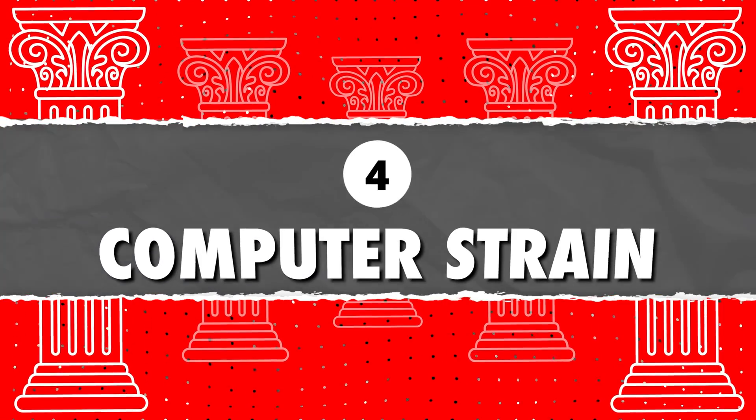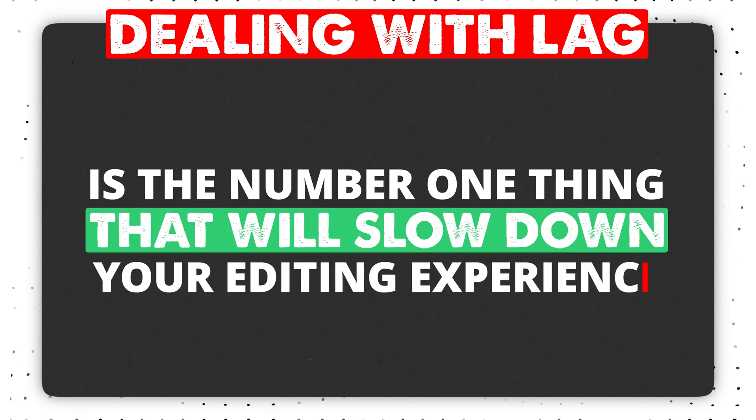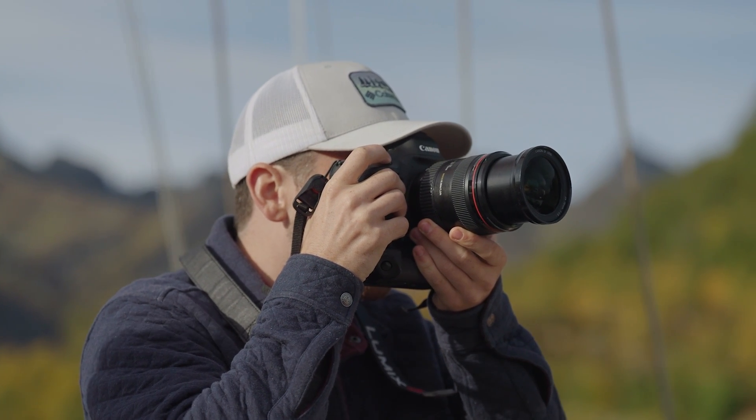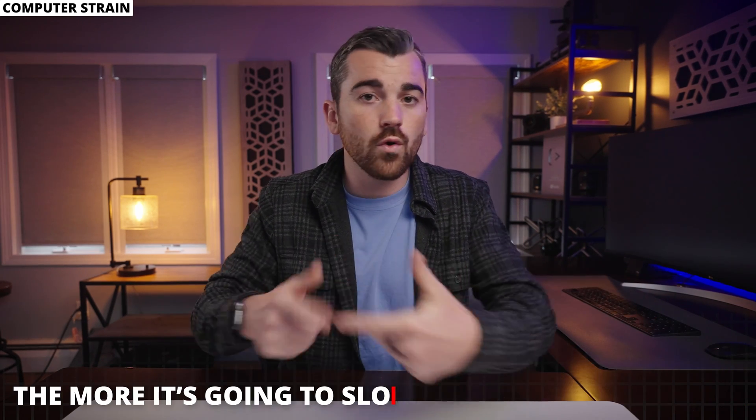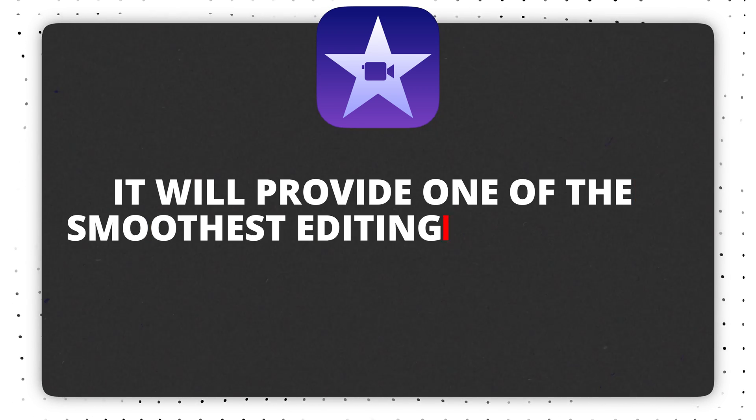Back to it — pillar number four is computer strain. If you've got anything but a top-of-the-line computer, pay close attention. One major point: if things are getting slow and laggy, before you blame the software, look at the type of footage you're editing. Shooting in high resolutions or a compressed codec like H.265 will slow down your computer even on expensive machines. iMovie was designed to work perfectly on Apple computers, providing one of the smoothest editing experiences even on older machines, so it's getting an 8 out of 10.